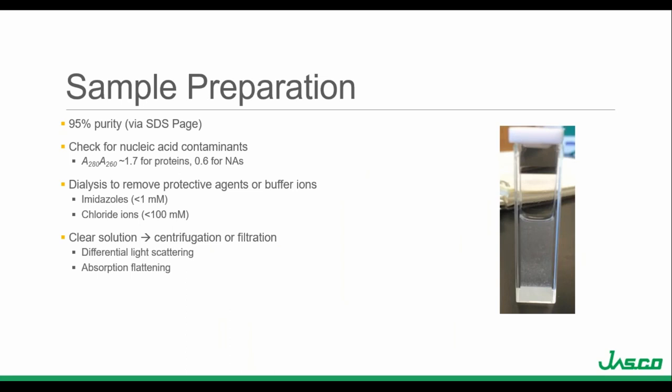While many samples do not require much sample preparation, there are a few things to keep in mind. Sample purity should be roughly 95% and can be checked via protein separation methods. The protein should be free of any additional chromophores or contaminants. To check for nucleic acid presence in a protein sample, absorbance can be monitored at 280 and 260 nanometers and the ratio calculated. A protein will have a ratio of about 1.7, while nucleic acids are about 0.6 — the lower the ratio, the more potential for nucleic acid contamination.